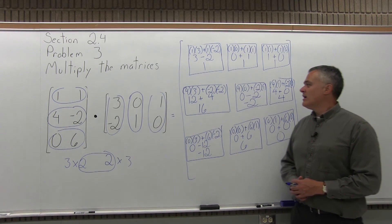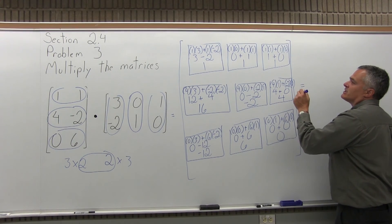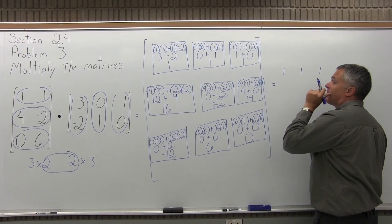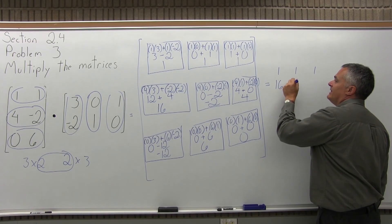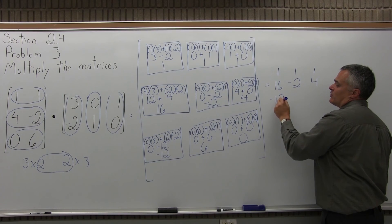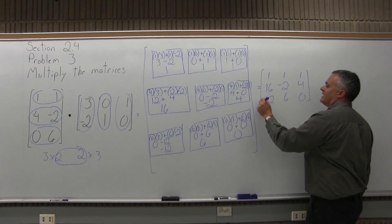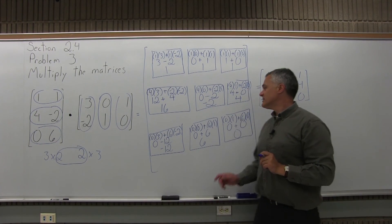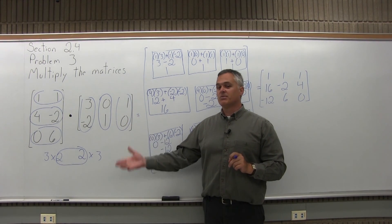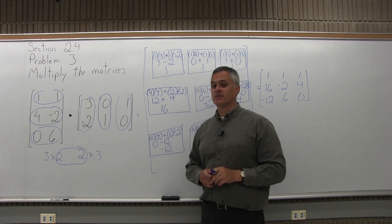That is the answer, but it's typically not shown with all that work. So the final answer is: 1, 1, 1 on the top row; 16, negative 2, 4 for the middle row; and negative 12, positive 6, 0 for the bottom row. Notice this is a very different answer from Problem number 2, where we multiplied the same matrices but in the opposite order and got a very different result.